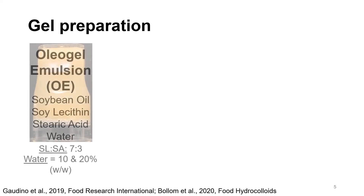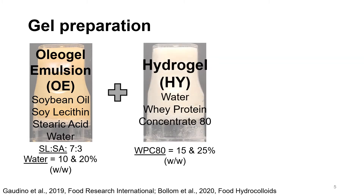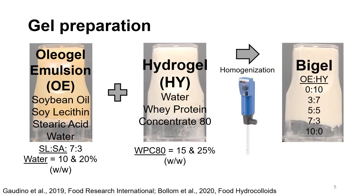Our organic phase was in fact an oleogel emulsion, because it contained a significant amount of water. The oil phase was developed previously in our lab by Gaudino et al., and was composed of soybean oil, soy lecithin, stearic acid, and water. Soy lecithin and stearic acid served as our organogelators and were used at a ratio of 7 to 3, respectively. We used two water usage levels, 10 and 20 percent. Our hydrogel phase was made from whey protein concentrate 80 and water, at two whey protein levels, 15 and 25 percent. We homogenized our phases at high shear for a high time to make a bi-gel. The ratios of phases are oleogel emulsion to hydrogel, so 0-10 is 0 parts oleogel to 10 parts hydrogel, 3-7 would be 3 parts oleogel to 7 parts hydrogel, and so forth.